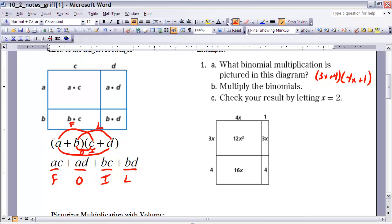Part B says to multiply those binomials. So let's go through and do that. Well, in essence, we can go ahead and do the FOIL method, but we don't need to. We already have the areas for these four rectangles listed below. Therefore, if I'm going to multiply those, all I need to do is take the sum of those areas. So it's going to be equal to 12x squared plus 3x plus 16x plus 4.